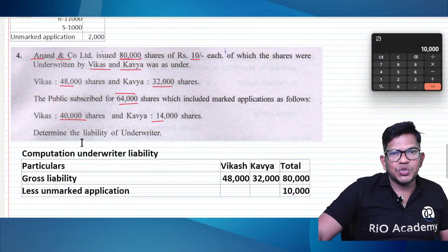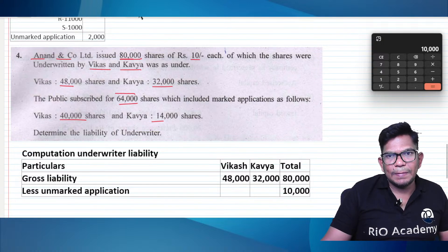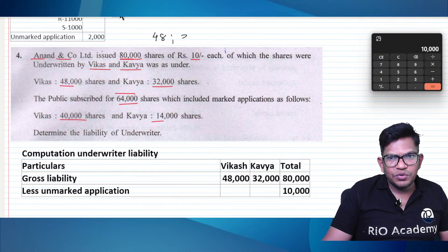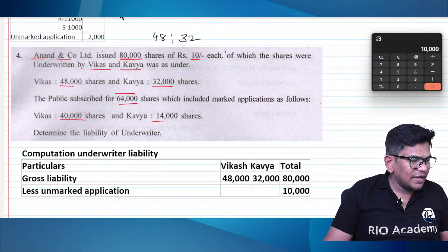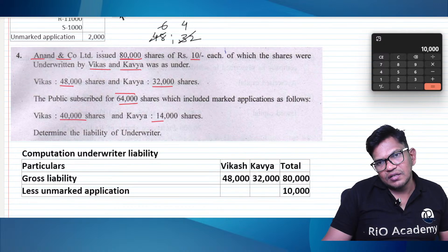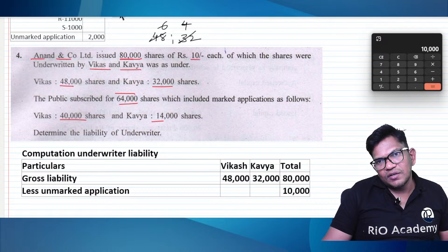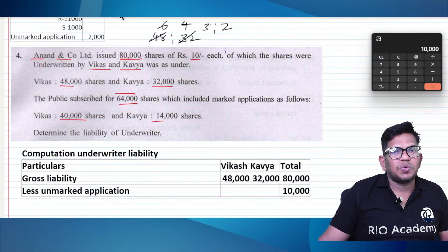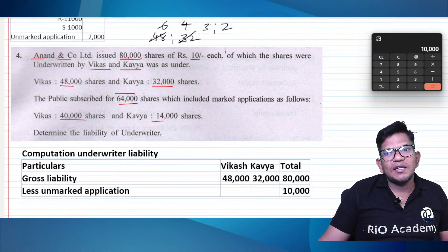Yes, in the ratio of 48 is to 32. So 48 is to 32 — that is like 4 to 2, or 4 to 3. Three is to two. Sixteen to two, sixteen to three.